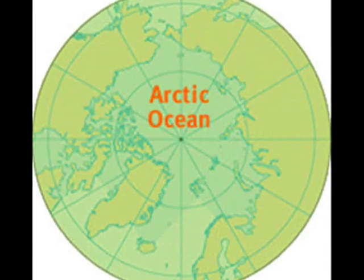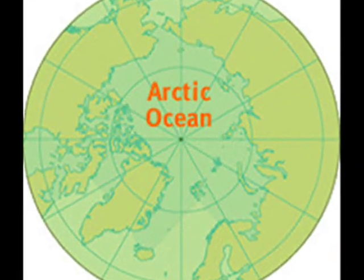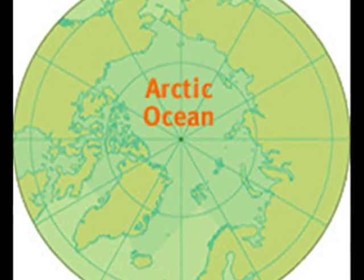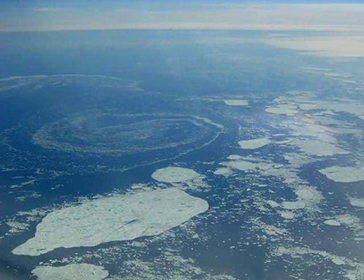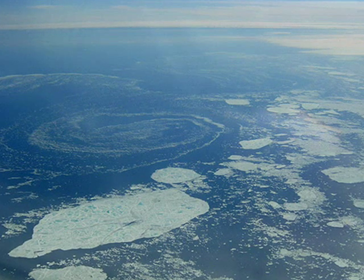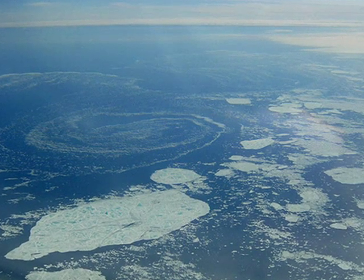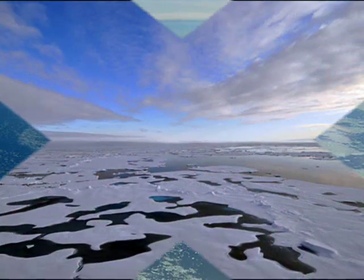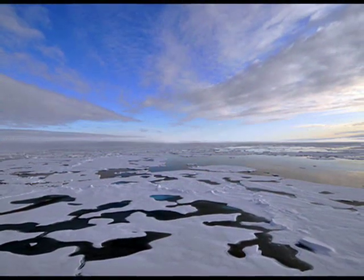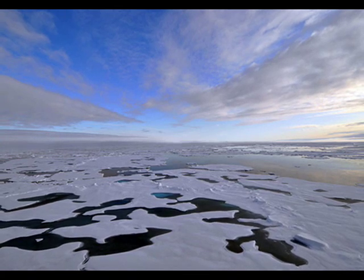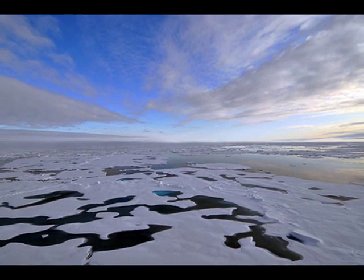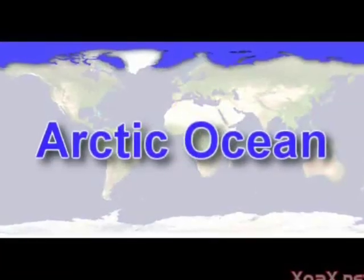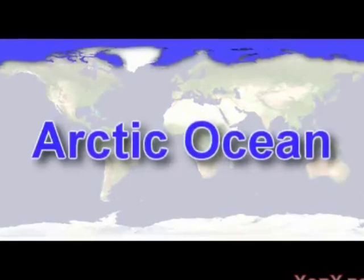The last ocean we are going to talk about is the Arctic Ocean. The Arctic Ocean is the smallest ocean in the world. The Arctic Ocean is between Europe, Asia, and North America. Not only is this ocean the smallest, but it also is the shallowest of the four oceans. The Arctic Ocean is also partly covered by ice all year long. The blue section of the map is the Arctic Ocean.